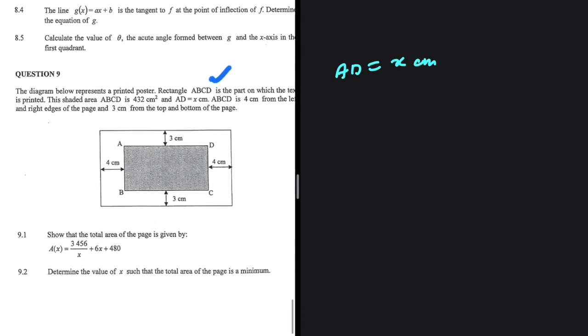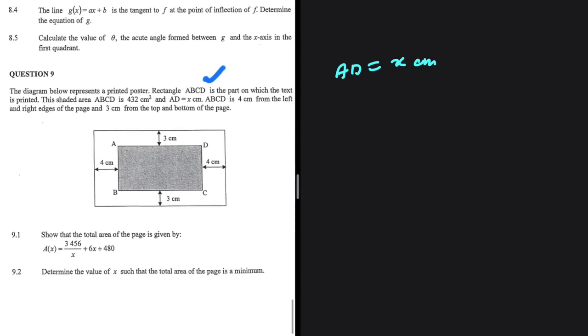Let's carry on. ABCD is 4 cm from the left and right edges of the page and 3 cm from the top and bottom of the page.